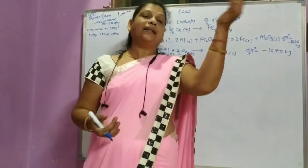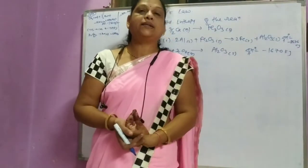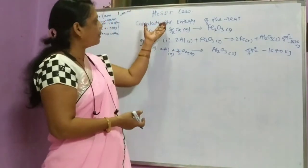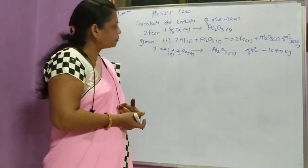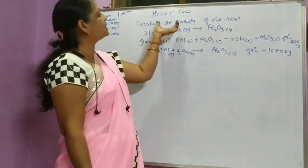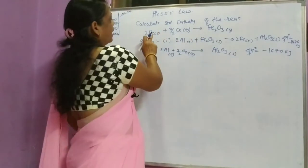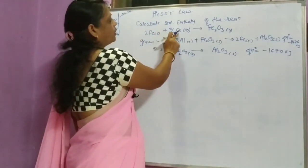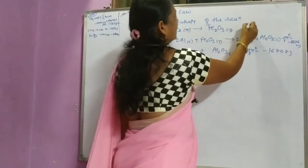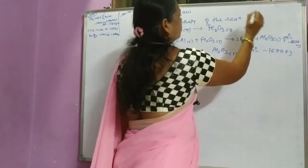We can calculate the standard enthalpy for the reaction. The reaction is given: Fe solid plus 3/2 O2 gas giving Fe2O3 solid, and ΔH for this reaction can be calculated.